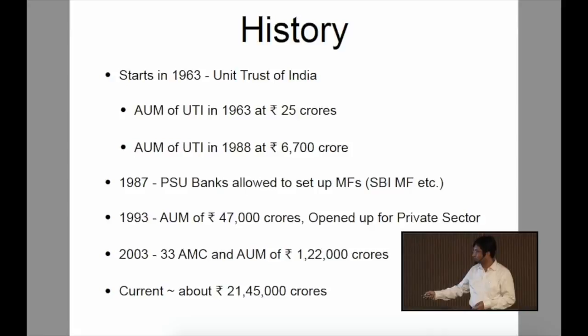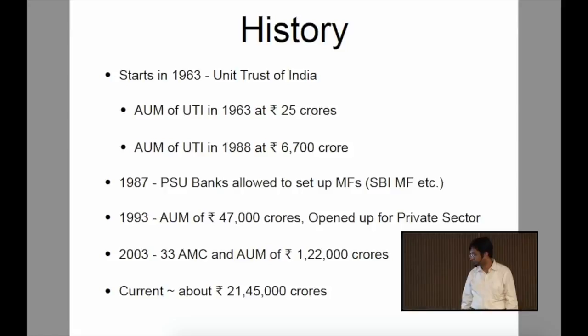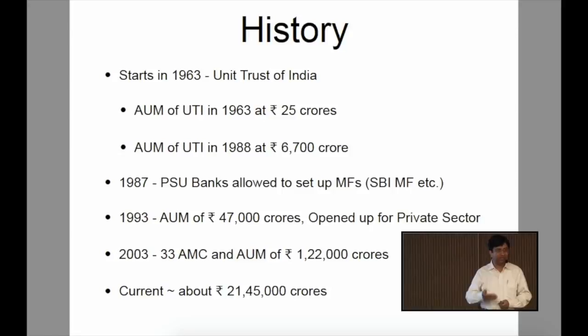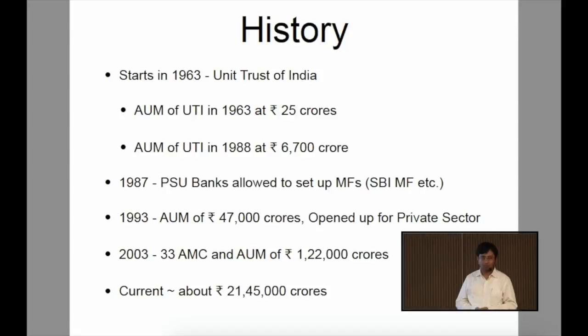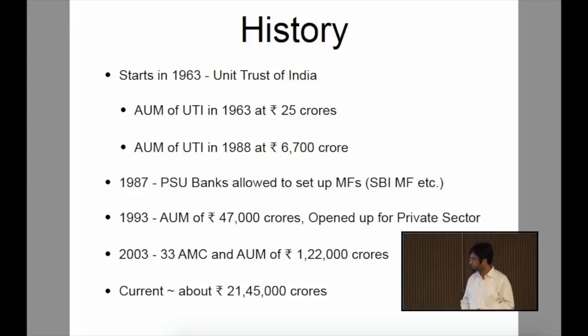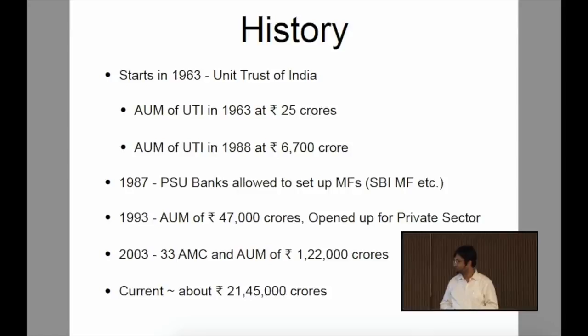Since we say it started in 63, that is actually not a mutual fund history. The actual history of mutual funds one can say started when private sector players were allowed in the space. Around that time, 47,000 crores of AUM was there with mutual funds. Gradually, SEBI came into existence; the Controller of Capital Issues was removed. All the mutual fund rules and regulations came in and things became more structured from this point onwards. Over a 10-year period, 47,000 crores grew to 1,22,000 crores. And from 2003 to 2017, we now have 21 and a half lakh crores assets under management. Of late, it has seen a lot of growth and a lot of money has come into the mutual fund space.